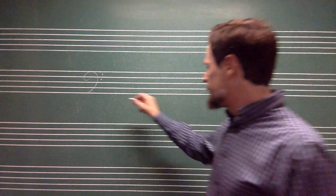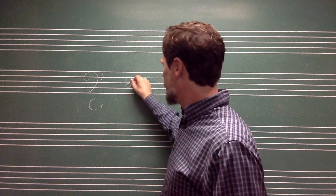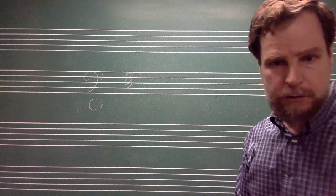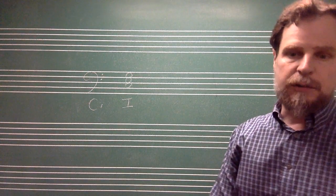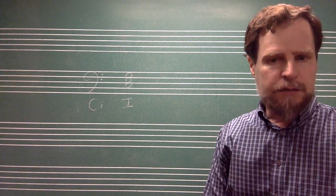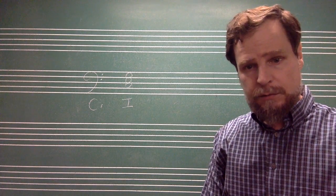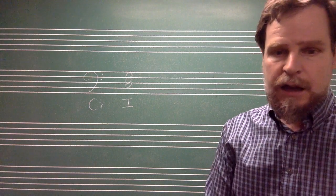If I'm in the key of C, that is my one chord, C, E, and G. If I move to, say, my four chord, which is F, A, and C, how do I get there?